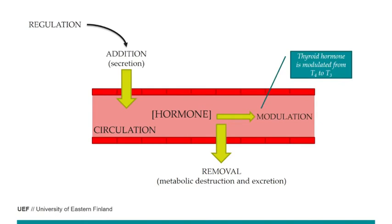Hormones can also be modulated. Sometimes we release them as pre-hormones that mature in the circulation. A good example is thyroid hormones: T4 is released and then modulated to T3 — triiodothyronine — making it more effective. In this case, the concentration isn't changing but the hormone becomes more or less effective depending on the modulation.